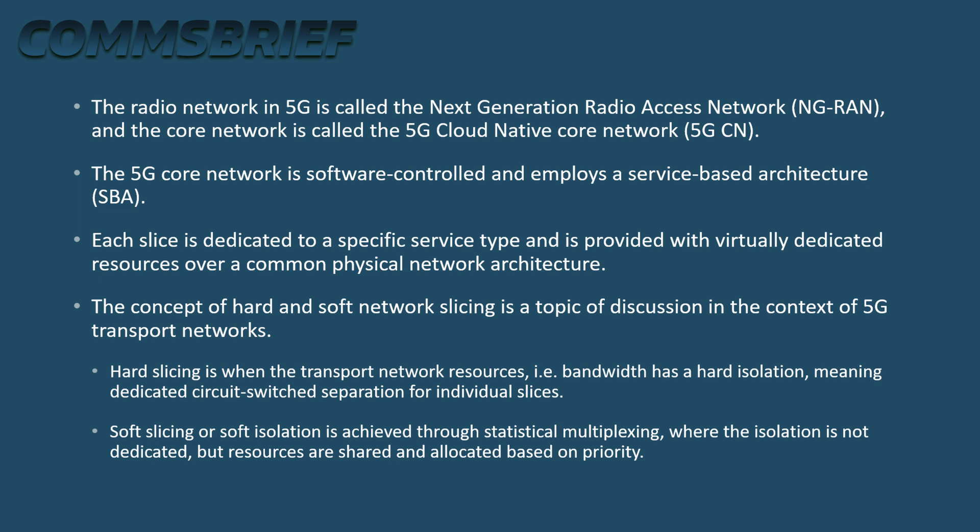The concept of hard and soft network slicing is a topic of discussion in the context of 5G transport networks. Hard slicing is when the transport network resources — that is, bandwidth — has hard isolation, meaning dedicated circuit-switch separation for individual slices. Soft slicing or soft isolation is achieved through statistical multiplexing, where the isolation is not dedicated but resources are shared and allocated based on priority.